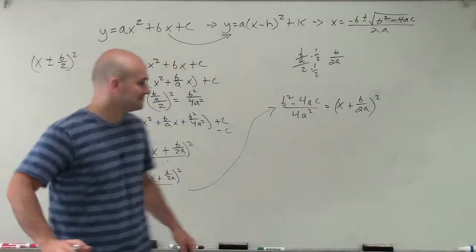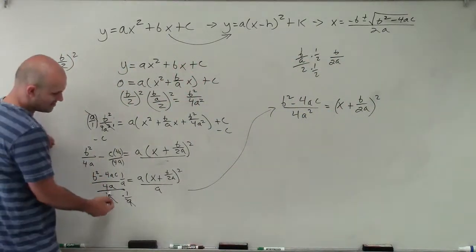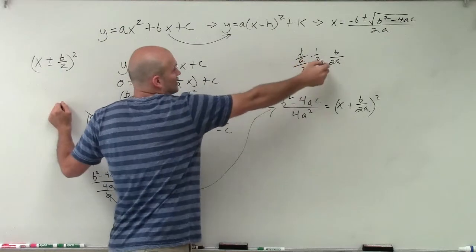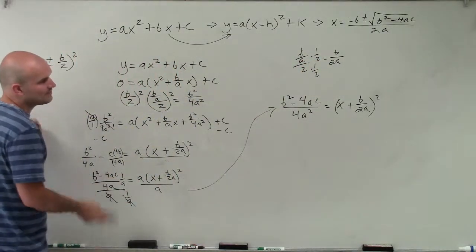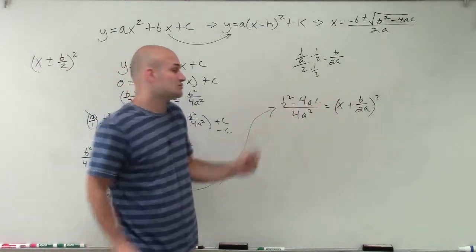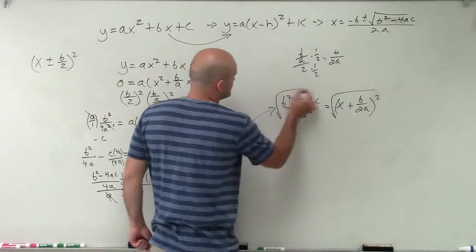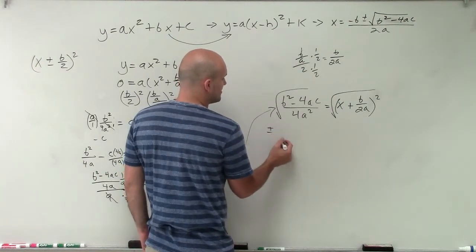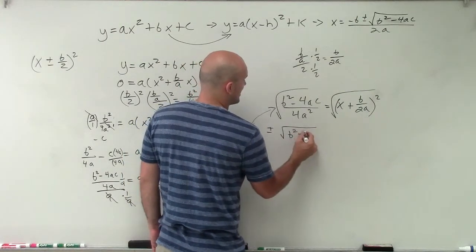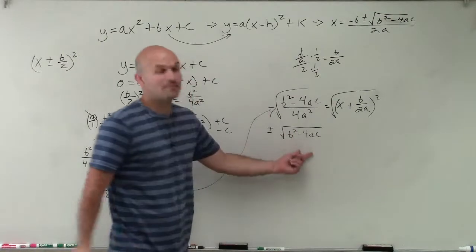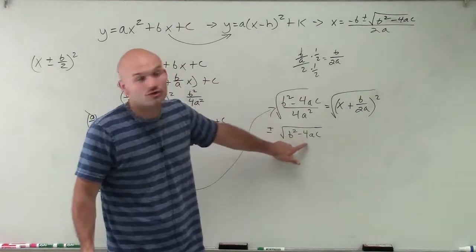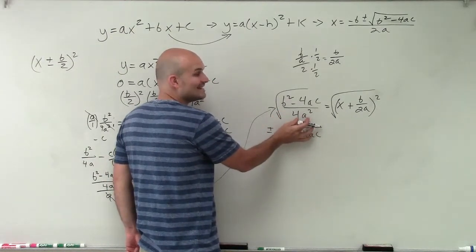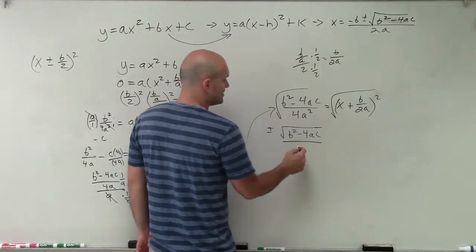I'm getting somewhere. Now I apply the square root method — I take the square root of both sides. Remember, when we take the square root we must include both the positive and the negative. So I get plus or minus the square root of b squared minus 4ac in the numerator. Since 4a squared is a monomial, I can take its square root, which becomes 2a. So the right side becomes x plus b over 2a.